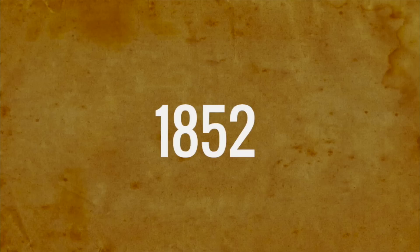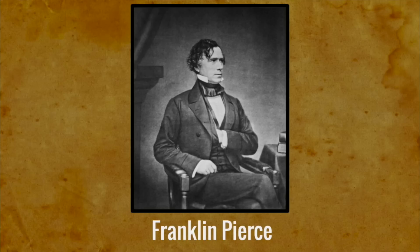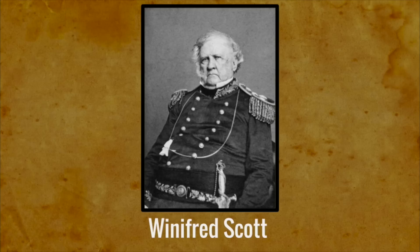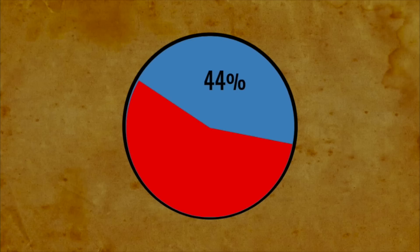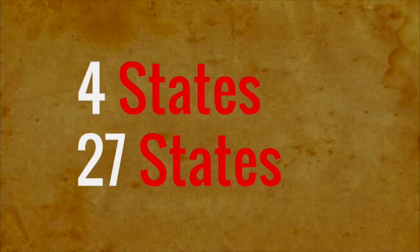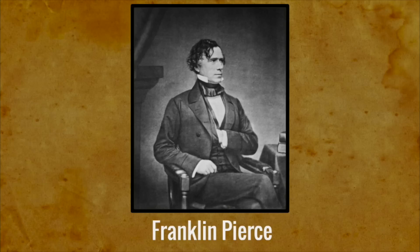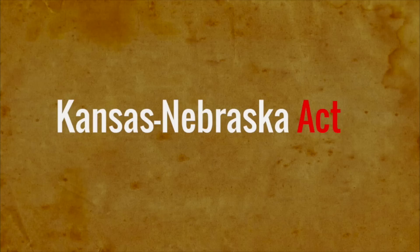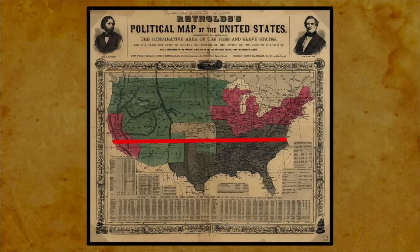Moving to 1852, the next election would have Franklin Pierce, a Democrat from the North, run against Winfield Scott, a general in the army, as a Whig. The election was one-sided, to say the least — while the popular vote percentage was 44% to 51% in Pierce's favor, Scott would win only four states to Pierce's 27. This defeat destroyed the Whig party even further and would begin its definitive decline. Pierce's largest action was by far his support of the Kansas-Nebraska Act, which made it so that the settlers of Kansas would vote on whether slavery was allowed in the region, breaking the Missouri Compromise, which had made slavery in new territories above a certain line illegal. This would be the breaking point for the Whig party, and the nation.